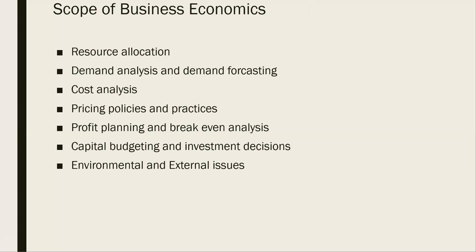Now we have the scope of business economics. Please write down the title 'Scope of Business Economics.' The first point in the scope is resource allocation. Whatever resources we are having, we need to allocate them properly according to the needs of humans in the market. Human wants are unlimited and can be fulfilled by optimum use of resources. Resources should be allocated in the proper way so that the most basic and primary needs can be satisfied using business economics.